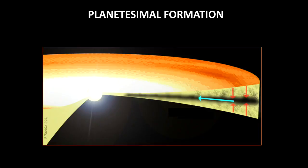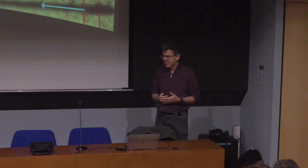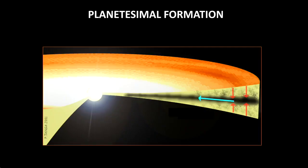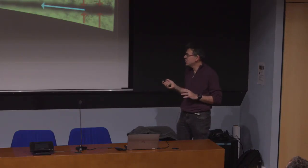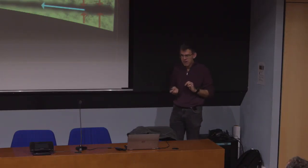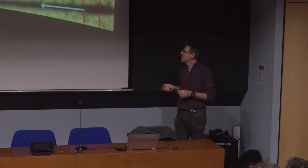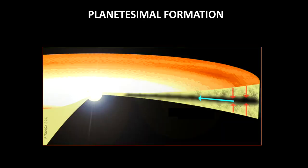Everybody knows that planets form in protoplanetary disks. When the star forms, the collapse of gas toward the central star necessarily creates a disk structure by conservation of angular momentum — predicted long ago by Laplace, now routinely observed when we image young stars in stellar associations. This protoplanetary disk is made mostly of gas but also of solid particles, and the mass ratio between gas and particles is roughly 100 to 1.